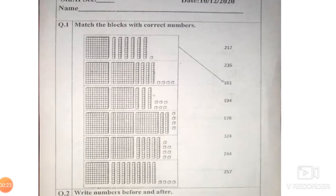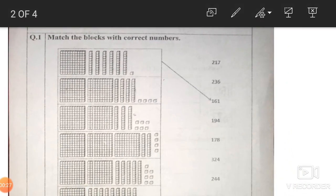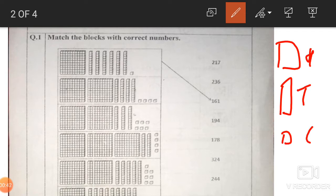Now see, this is also very easy. The symbols are given over here. Symbols are given, only we have to match with the number. As you know that the big one, this big box, the bigger box is of 100's. Okay, the bigger one is of 100's.